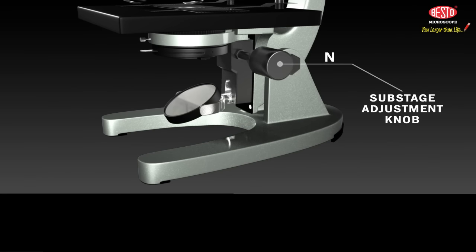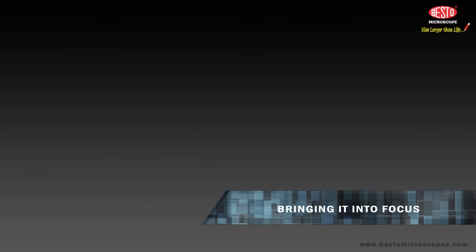N. Sub-stage adjustment knob is used to move the condenser up and down, bringing it into focus.